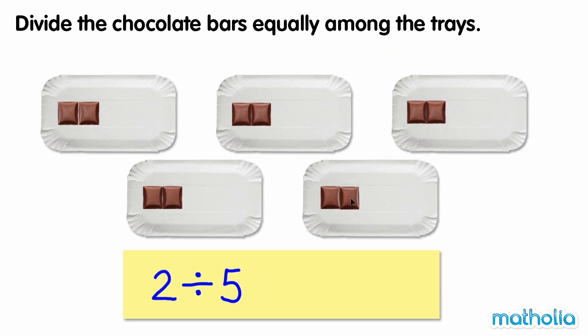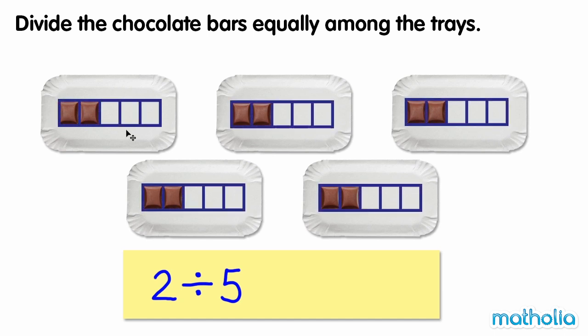We have divided the two chocolate bars equally among the trays. Each tray contains two fifths of a bar of chocolate, so two divided by five is equal to two fifths.